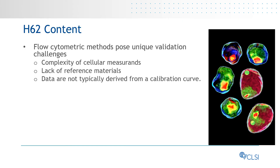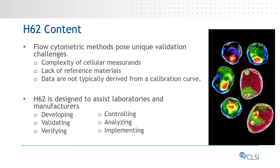Flow cytometric methods pose unique validation challenges due to the complexity of cellular measurements, the lack of reference materials, and because data are not typically derived from a calibration curve. The H-62 content is designed to assist laboratories and manufacturers in developing, validating, verifying, controlling, analyzing, and implementing cell-based flow cytometry tests.